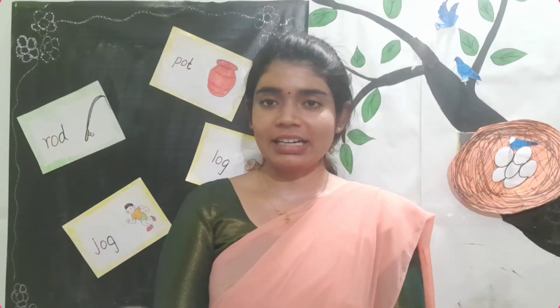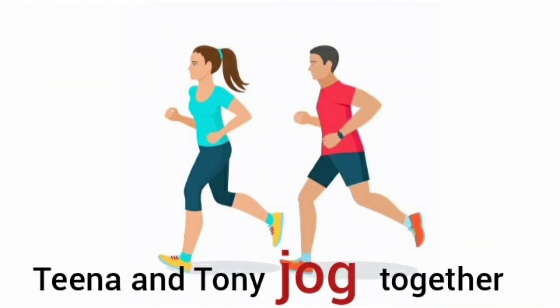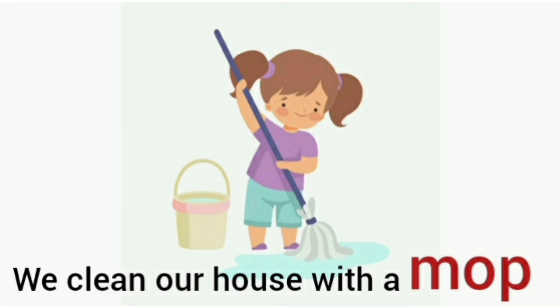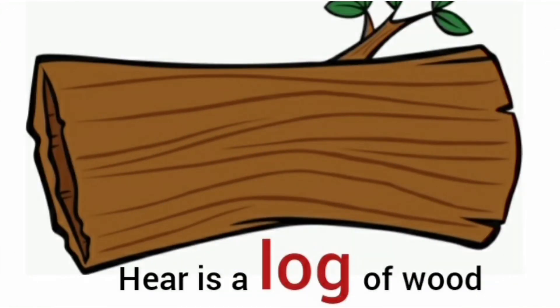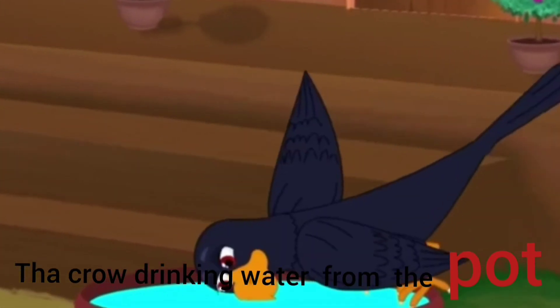Children, now let's make some sentences with these words. Tina and Tony jog together. We clean our house with a mop. Here is a log of wood. The crow drinking water from the pot.